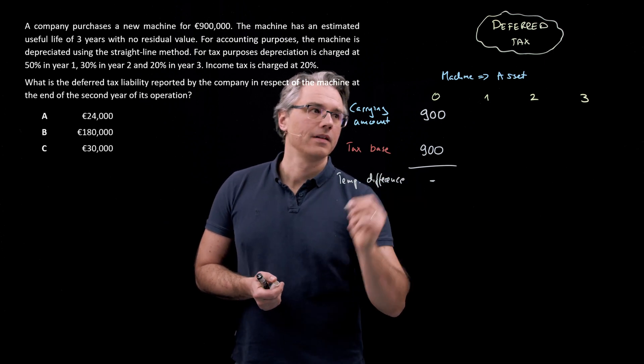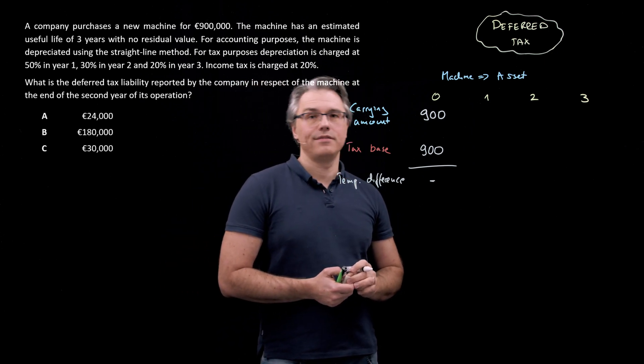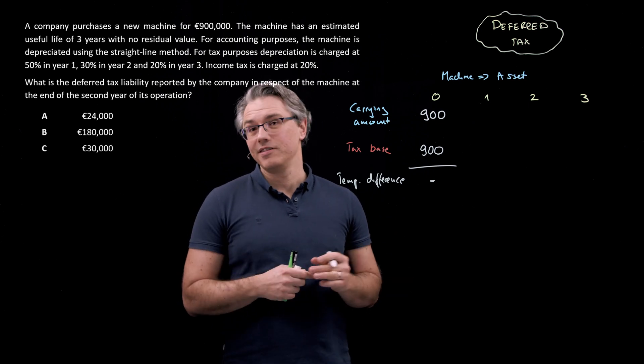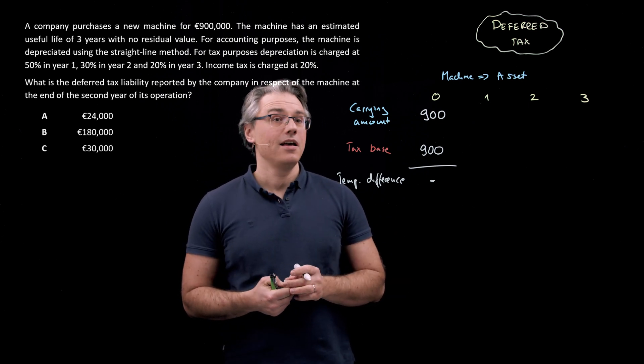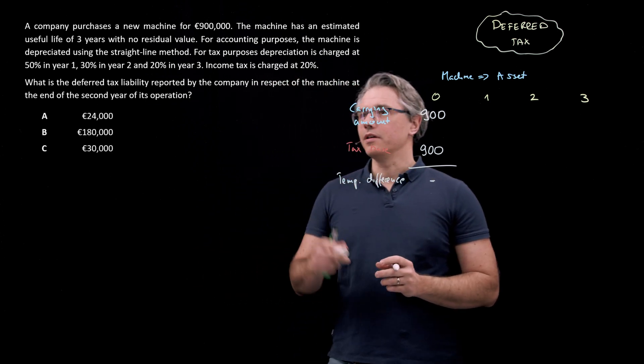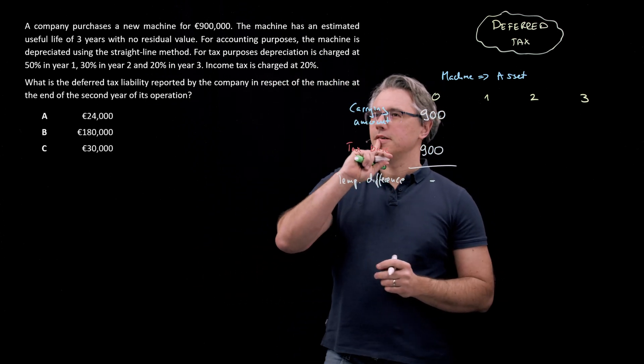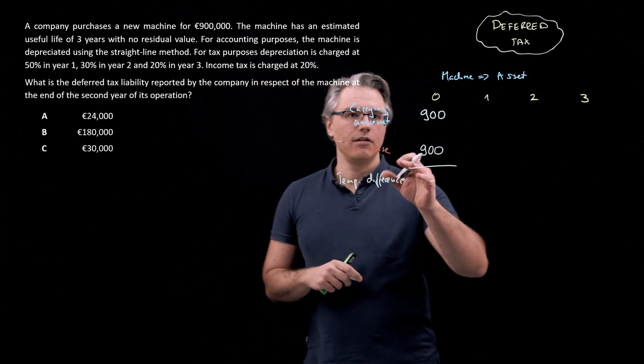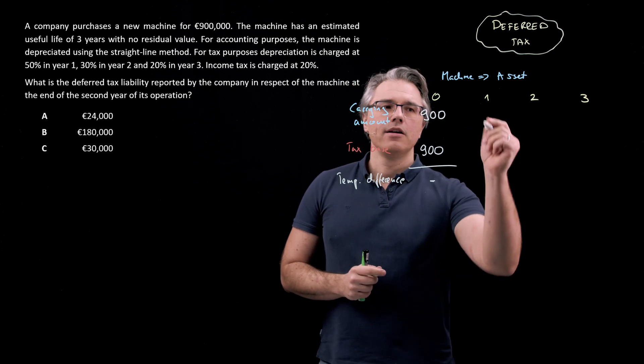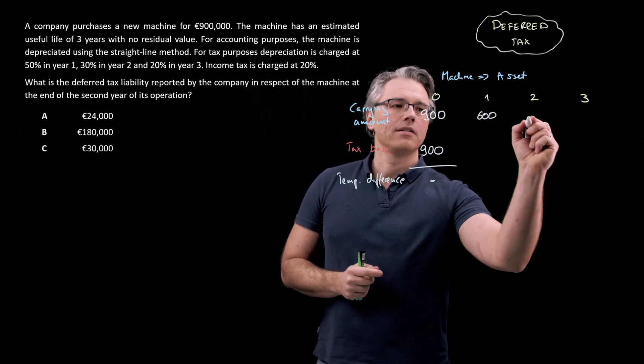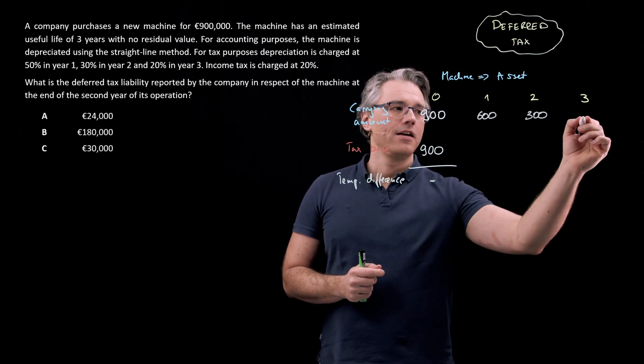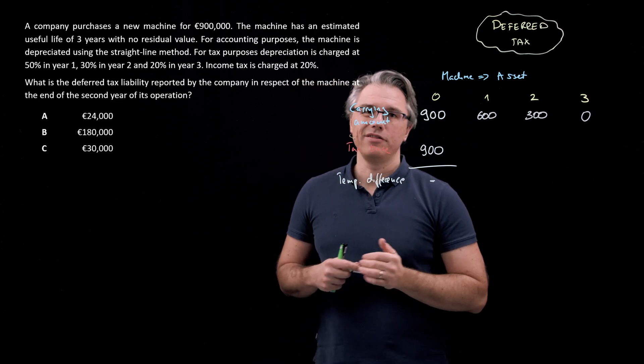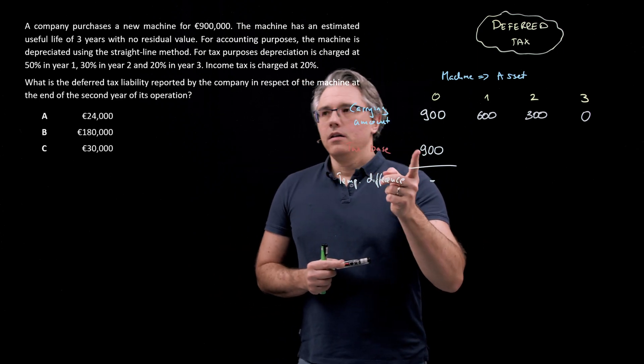When the machine is first acquired, it is entered into the books both for tax purposes and for financial reporting purposes. So its initial measurement is 900,000 over here in terms of the carrying amount, as well as the tax base 900. And there is no difference at all. So temporary difference, nothing. However, starting from year one, that difference will occur because the item is depreciated under different assumptions or different bases for tax purposes and financial reporting.